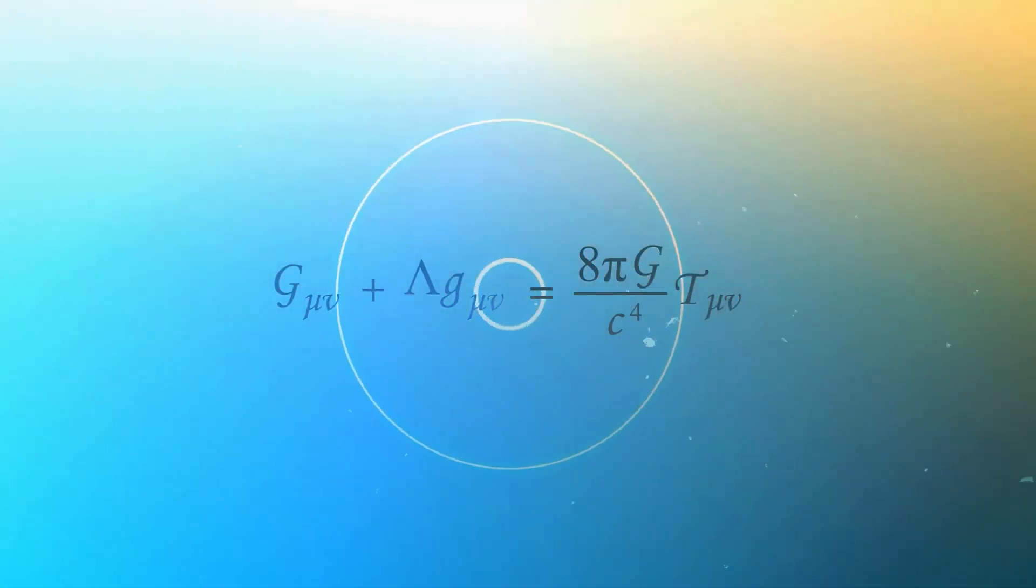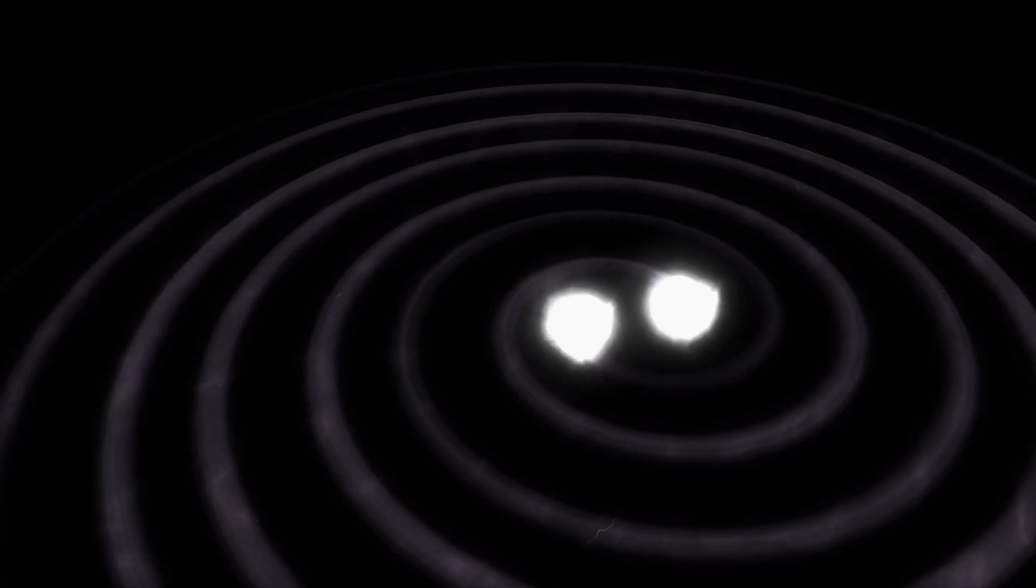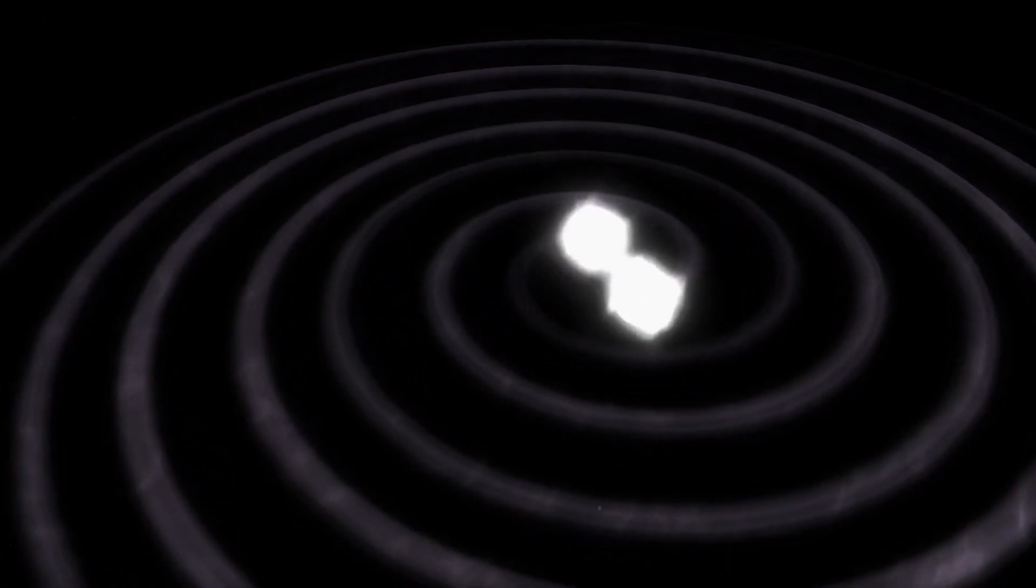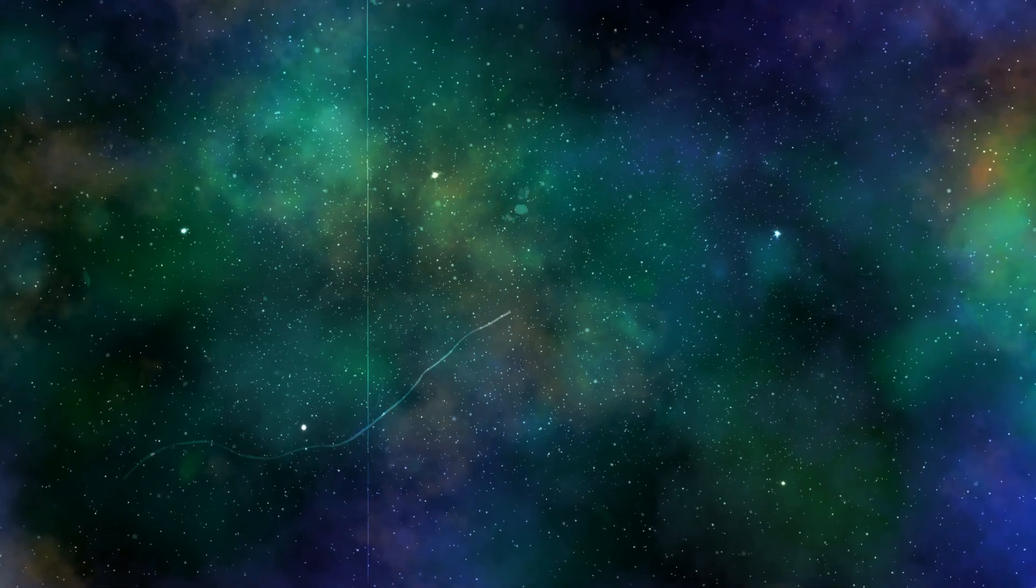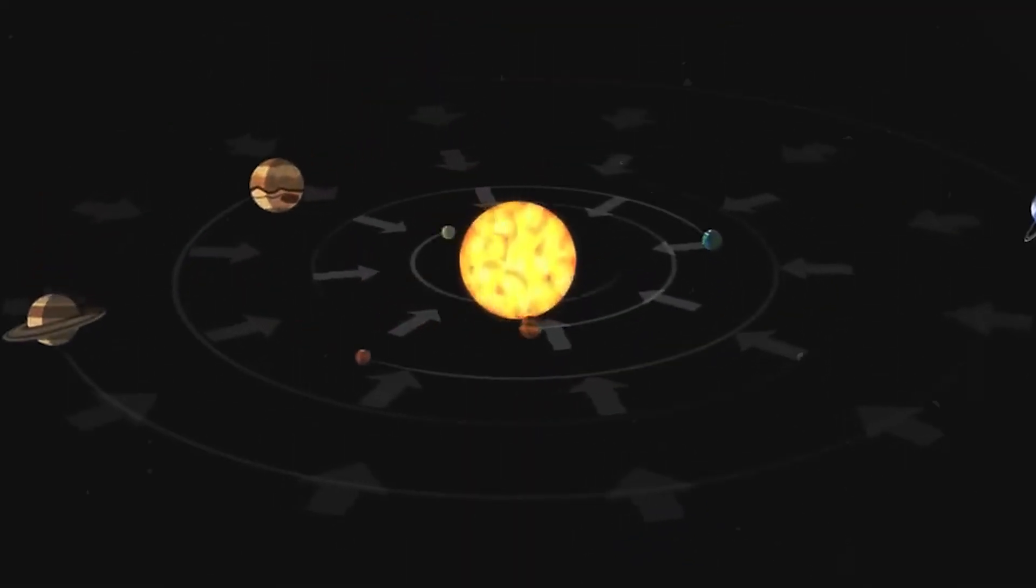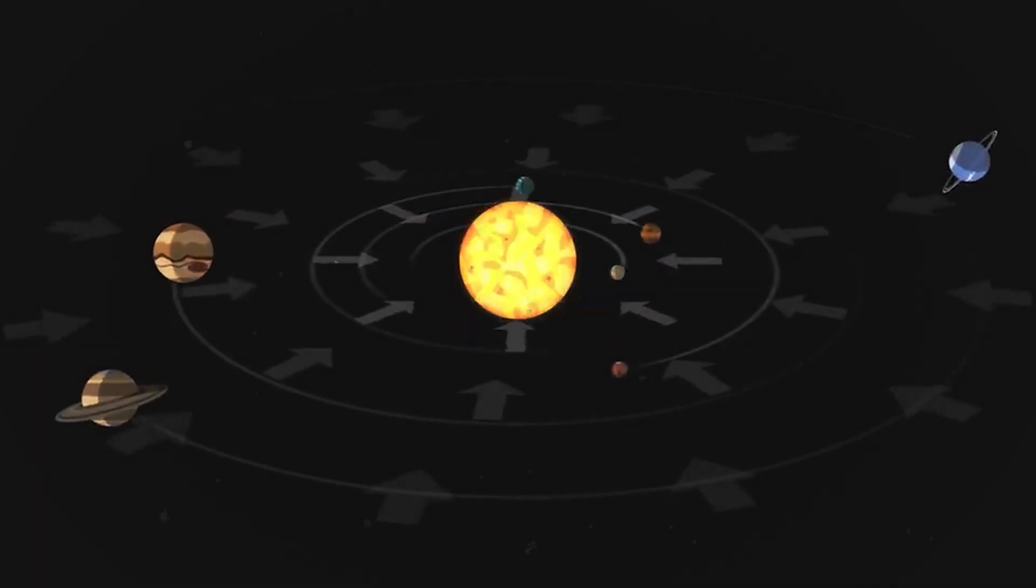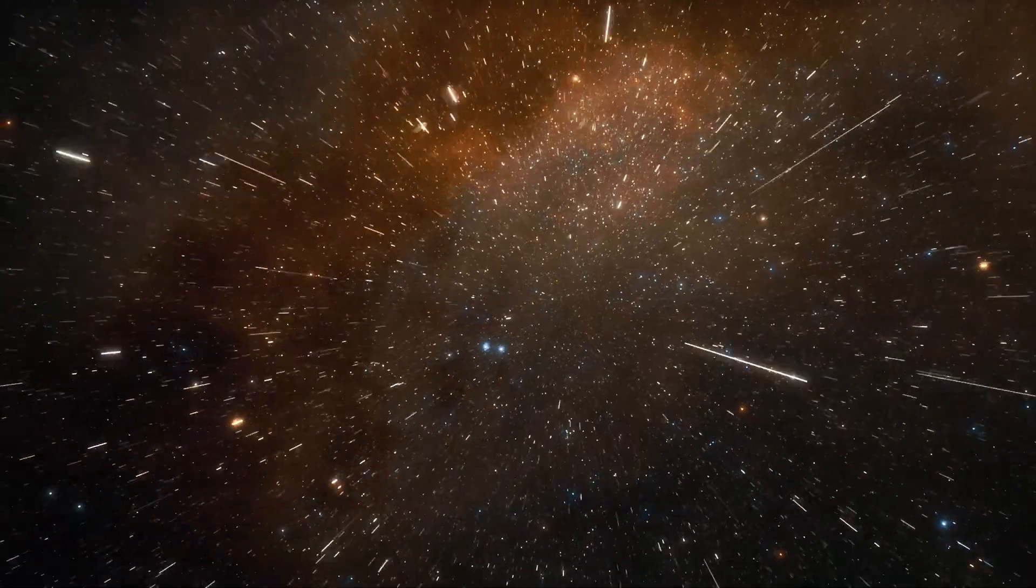Einstein's theory of general relativity gives us a lens through which we can understand this strange behavior. In general relativity, space isn't just some background in which other things can move around. Instead, space itself can stretch and warp and evolve over time.